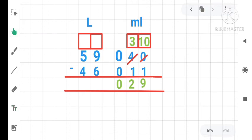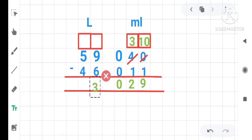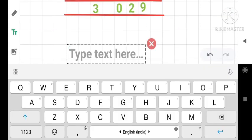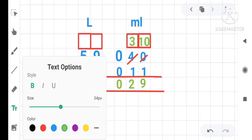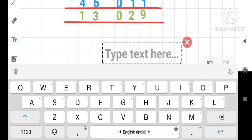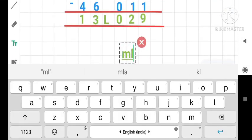Now let's subtract the values of liter. So subtract 6 from 9. When we subtract 6 from 9, we get 3. Very good. Now let's subtract this 4 from 5. When we subtract, we get only 1. So our answer here is 13. But don't forget to write its unit. That is liter and milliliter.